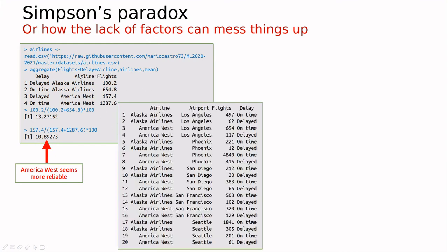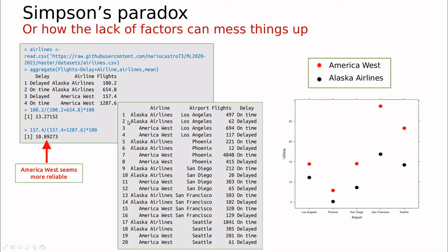But this is the problem. The problem is that we are aggregating for airlines and airports. So what happens if we take a look at the data? We took a look at the data. We have something very striking. Airport by airport, you could see that Alaska Airlines is more reliable than America West. So how on earth is it possible that when you aggregate the data, you see something like this in which America West seems more reliable, so it has less delayed flights. But when you compare airport by airport, the black lines are always lower than the red one.